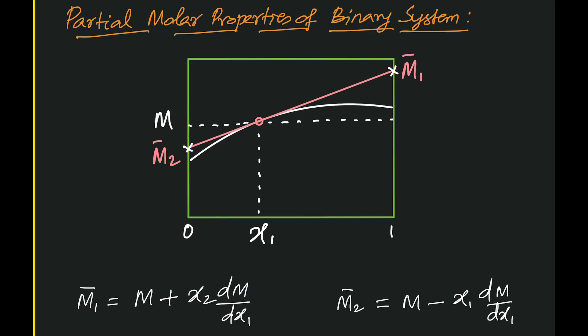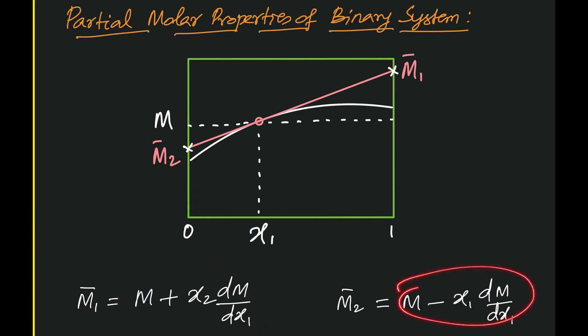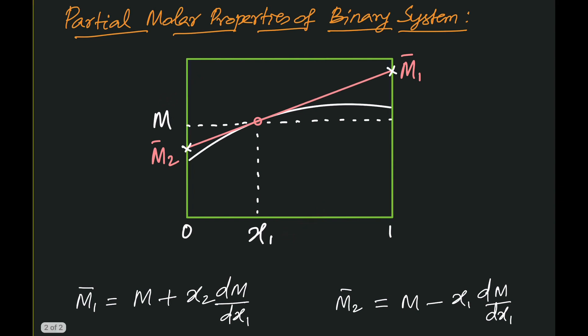The objective of this lecture is to obtain the expressions for partial molar quantities for a binary system. We will see the derivation of how these equations come about and represent these partial molar quantities, m̄₁ and m̄₂, in a graph of m versus x₁. I will give the reasoning for how this graph is constructed and how to obtain these derivations.